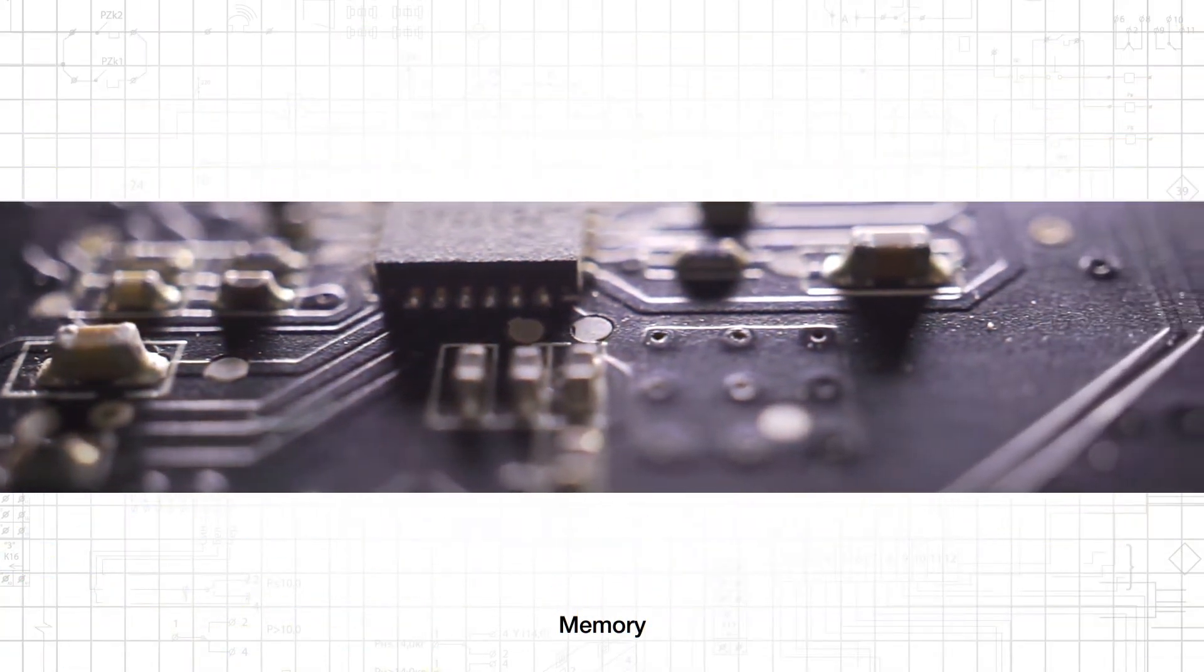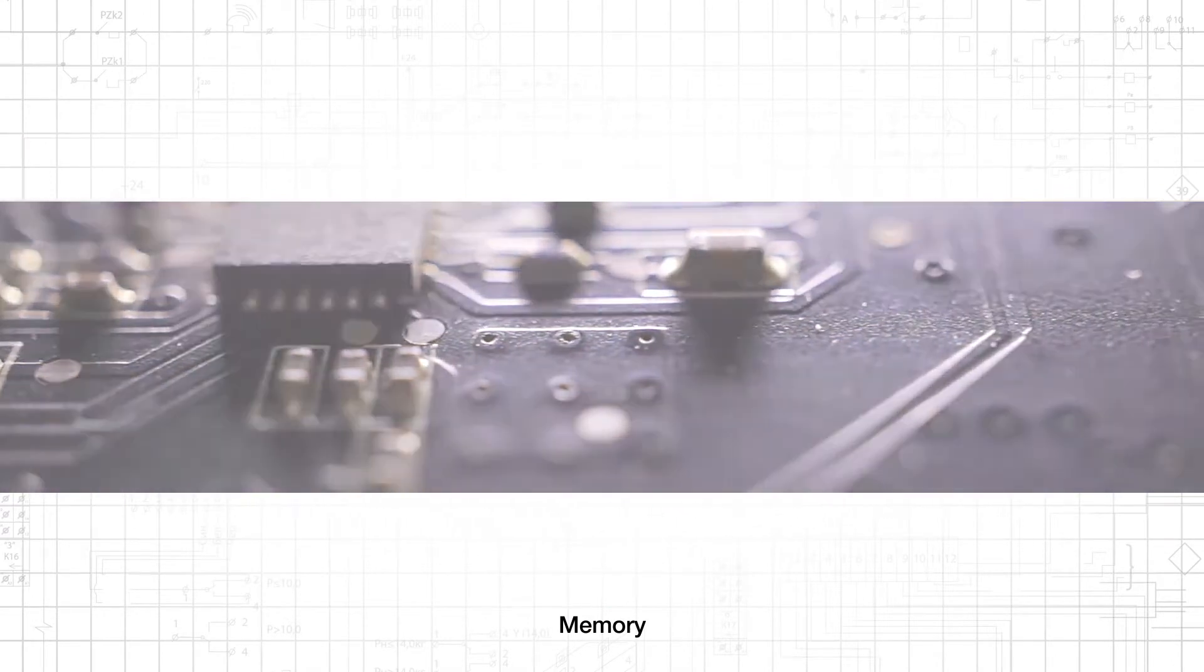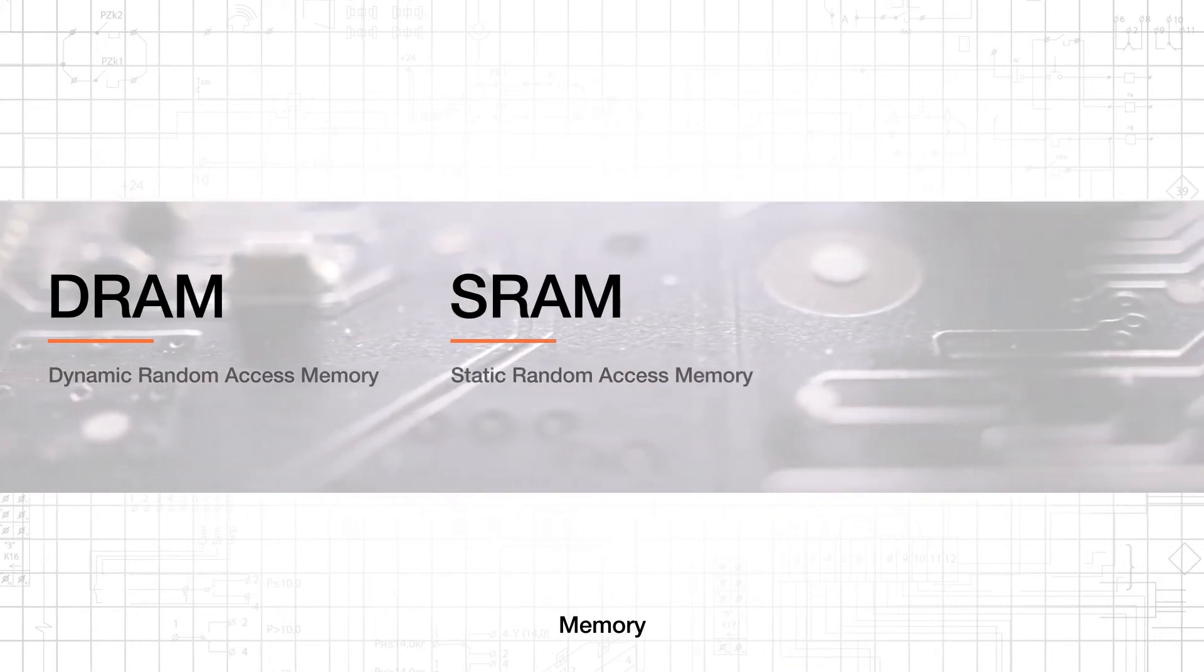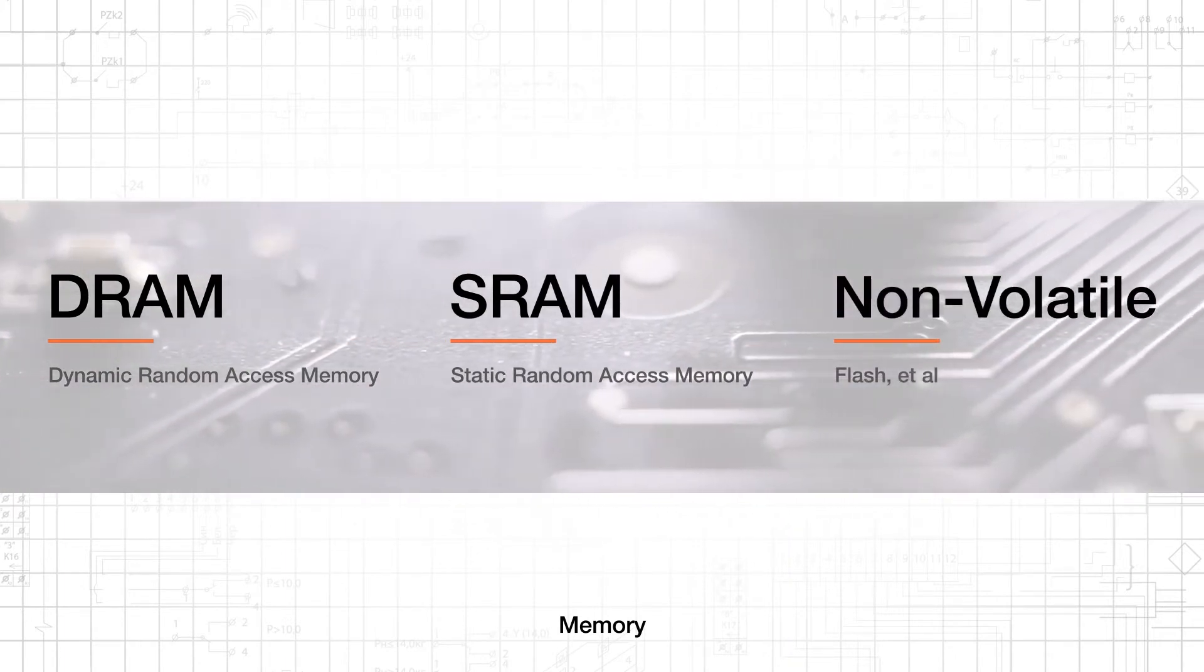Memory is a crucial element of digital and mixed signal systems. Different types of memory include dynamic random access memory, or DRAM, static random access memory, or SRAM, and non-volatile memory such as flash.